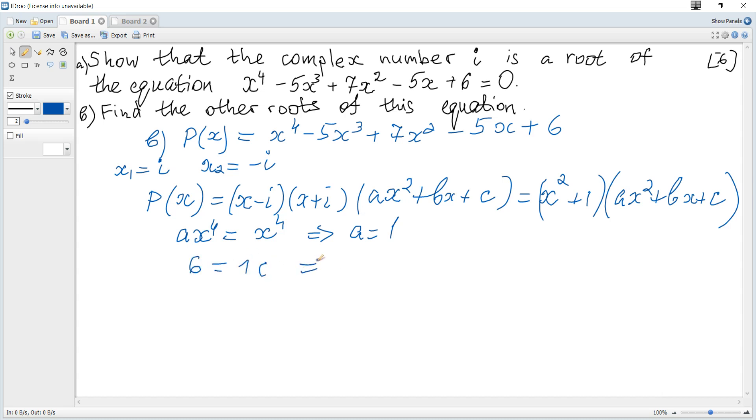Hence c is 6. To find b, we equate terms containing x: -5x equals bx (we get terms containing x only when 1 is multiplied by bx), hence b is -5.